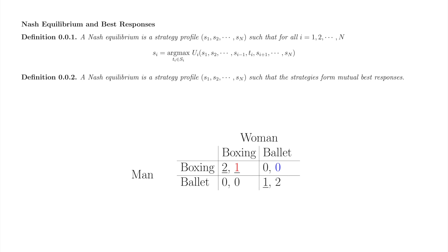Now, we'll find the woman's best responses. If the man plays boxing and the woman responds boxing, she receives payoff 1 in red. If she responds ballet, she receives payoff 0 in blue. The woman prefers 1 to 0, so her best response to the man playing boxing is to play boxing herself. We'll underline the 1 to record this information.